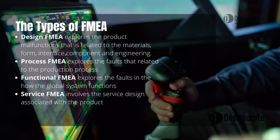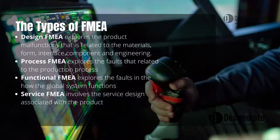The failure mode and effects analysis includes four types. Design failure mode and effects analysis explores the product malfunctions related to the materials, form, and interface. Process failure mode and effects analysis explores the faults related to the production process. Functional failure mode and effects analysis explores the faults in how the system functions. Service failure mode and effects analysis involves the product service design.